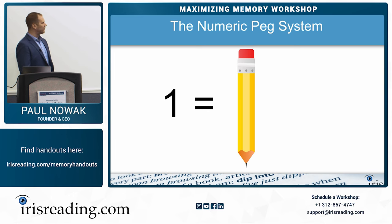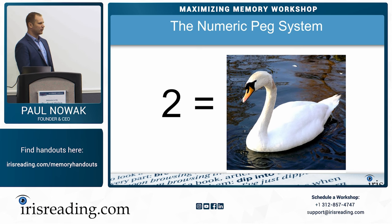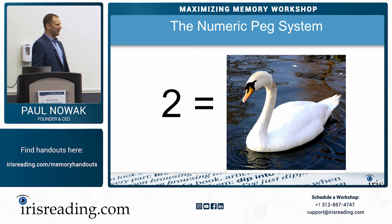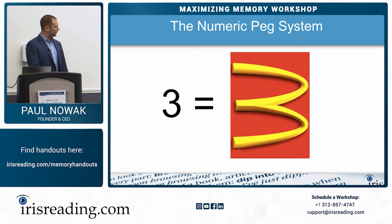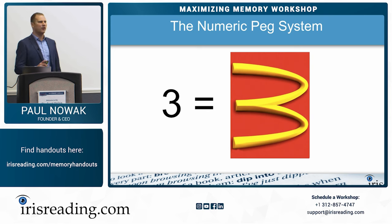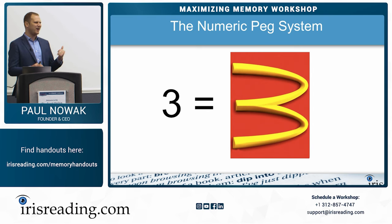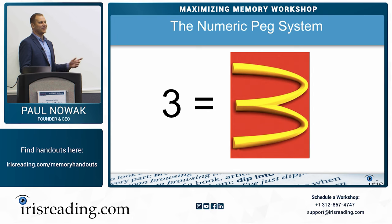Number one is a pencil — same shape. Two is a swan — see the same shape? Three is McDonald's — you've got to turn your head sideways, but when I tell you three, think of McDonald's. Notice what we're doing: abstract information is harder for the brain to remember than visual information. Right now we're converting numbers to visuals, and that's going to help us later on.